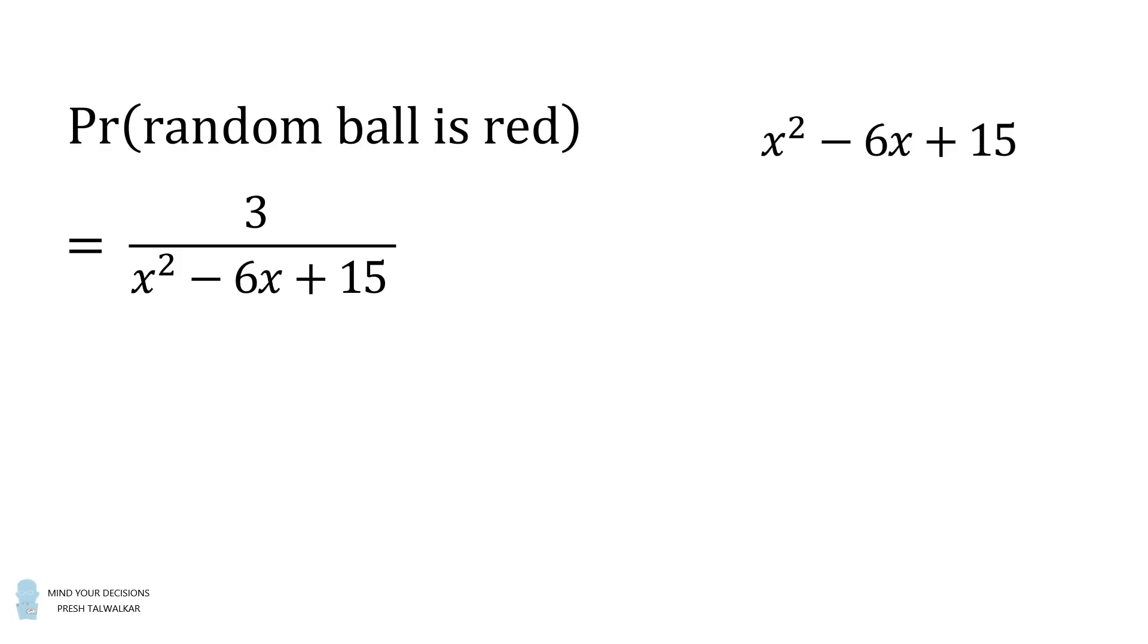To analyze this function, we'll complete the square. We'll rewrite this as x squared minus 6x plus 9 plus 6. The first three terms will simplify to be x minus 3 the quantity squared, then we add 6.